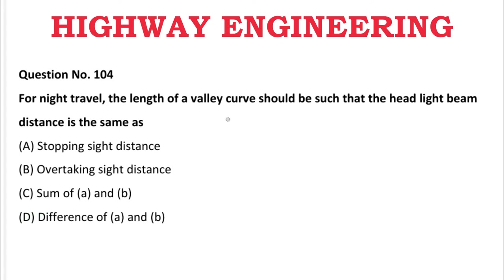Next question: For night travel, the length of the valley curve should be such that the headlight beam distance is the same as — A: stopping sight distance, B: overtaking sight distance, C: sum of A and B, D: difference of A and B. The correct answer is A, stopping sight distance.